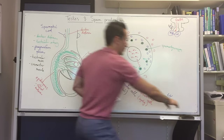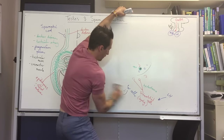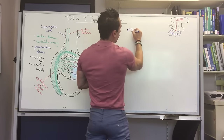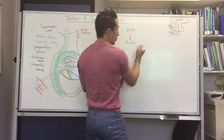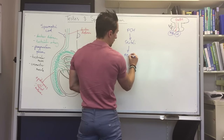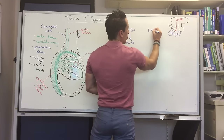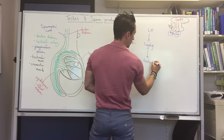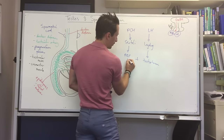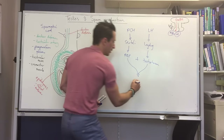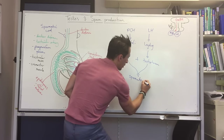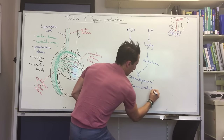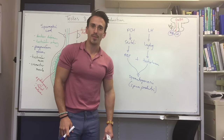To summarize: follicle-stimulating hormone stimulates the Sertoli cells, which release ABP. Luteinizing hormone stimulates the Leydig cells, which release testosterone. Together, these stimulate spermatogenesis — which is sperm production.